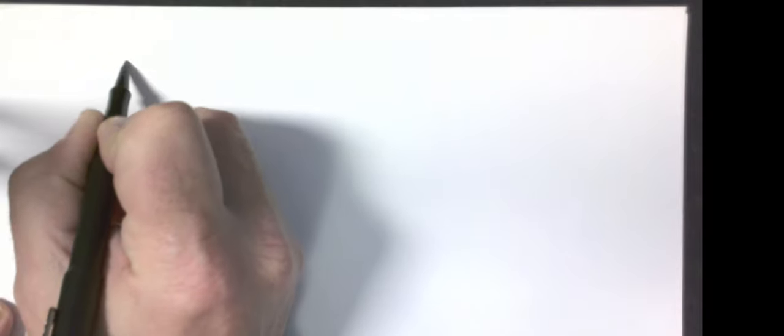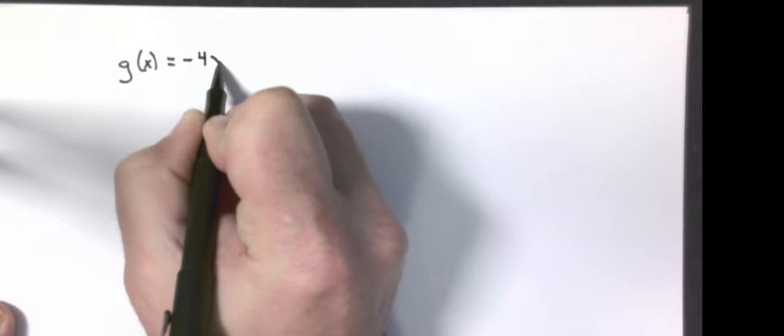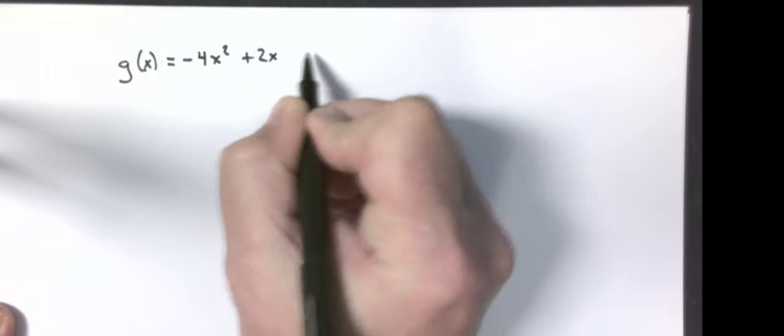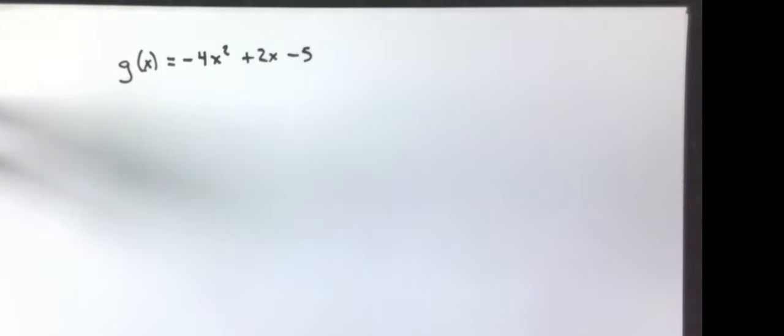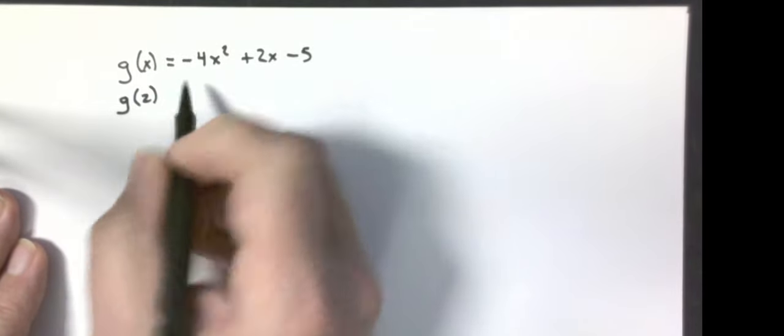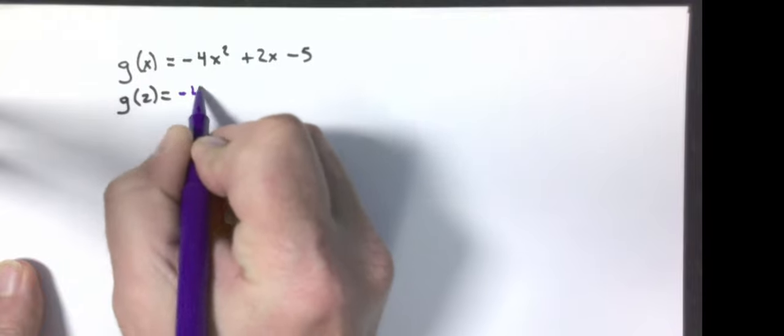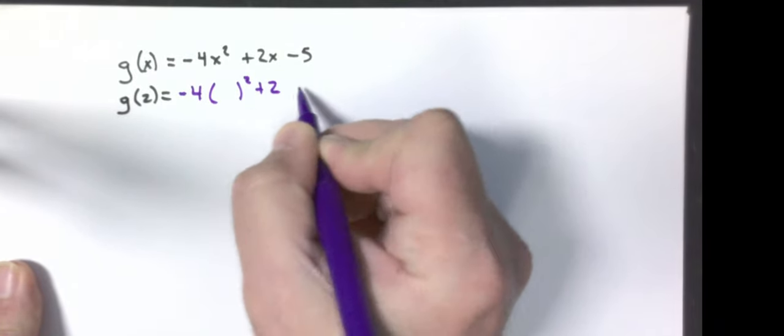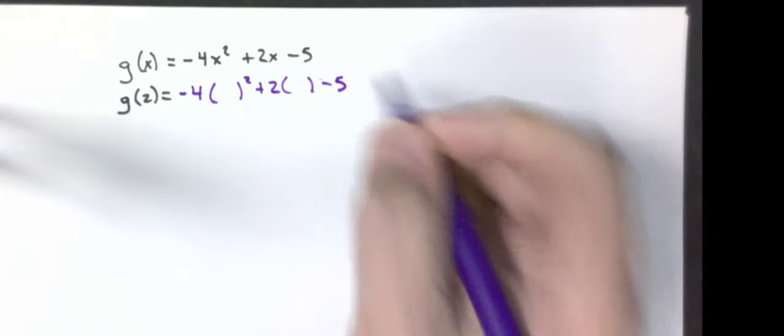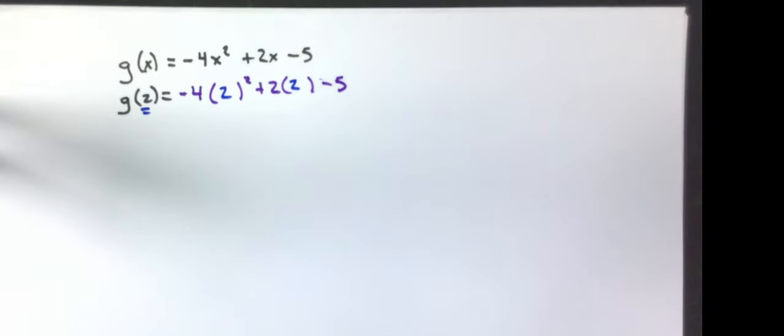I'm going to call this function g of x. That is equal to negative 4x squared plus 2x minus 5. I want to know what f of 2 is. So remember, our step one is to copy the original equation except where there's an x, put parentheses. In this case, I have more than 1x. Inside the parentheses, I'm going to put my input value.